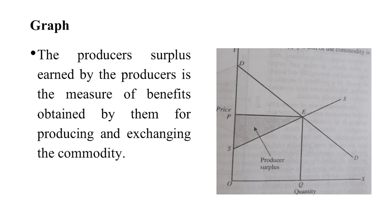The shaded area shows that he expects OS price from the market but actually receives OP. So this shaded area shows the producer surplus. SS is the supply curve and DD is the demand curve. The slope of the supply curve is upward and the slope of the demand curve is downward.